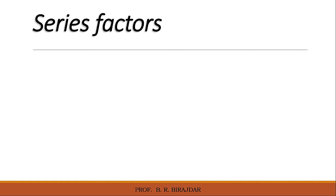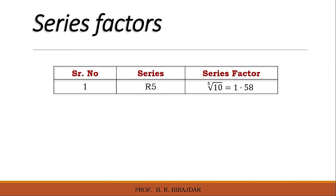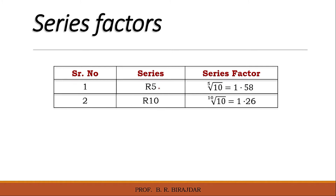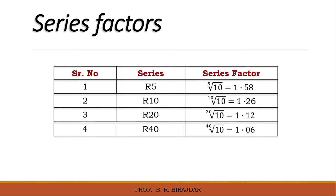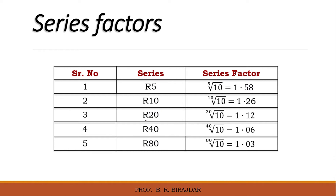Each series has its own series factor. For R5, the series factor is the 5th root of 10, which gives 1.58. For R10, the 10th root of 10 gives 1.26. Similarly, for R20 you get 1.12, for R40 you get 1.06, and for R80 you get 1.03. These are the five different series factors for the five different series.